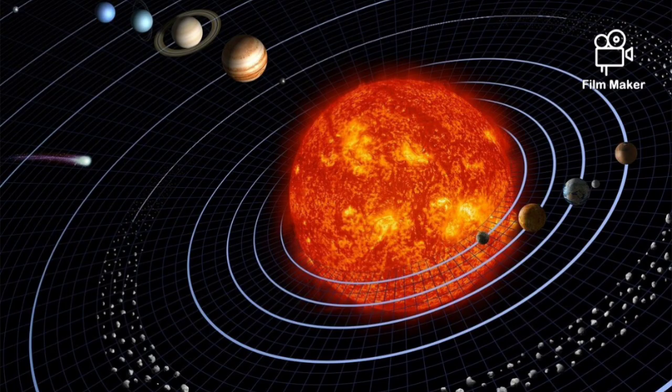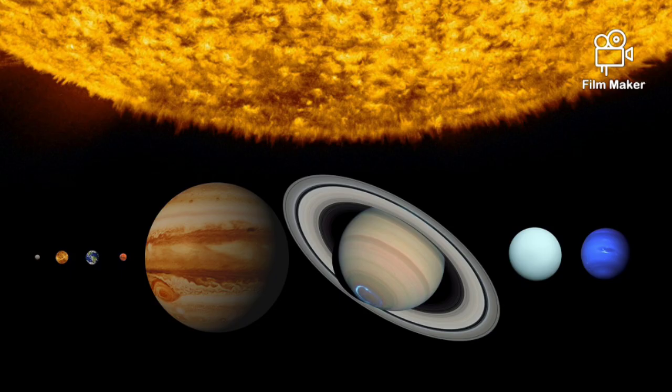Asteroids are also revolved around the sun. Compared to the sun, other heavenly bodies in the solar system are much smaller.